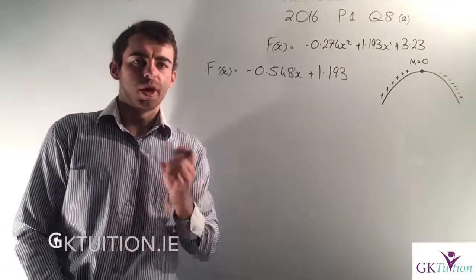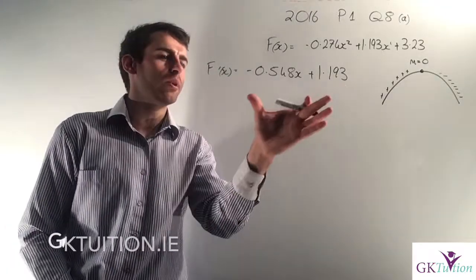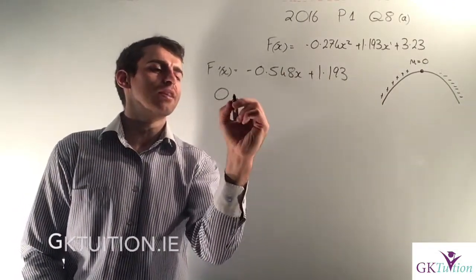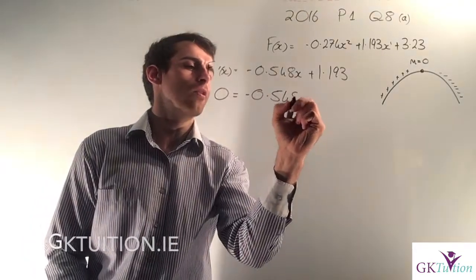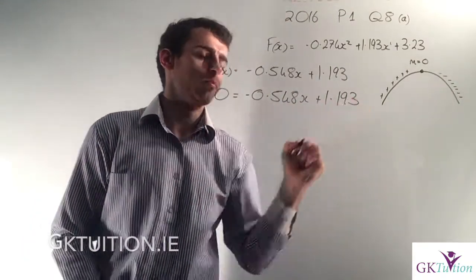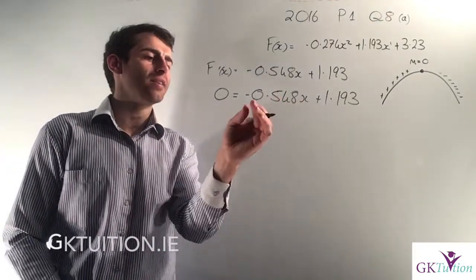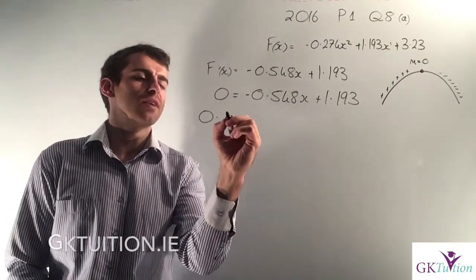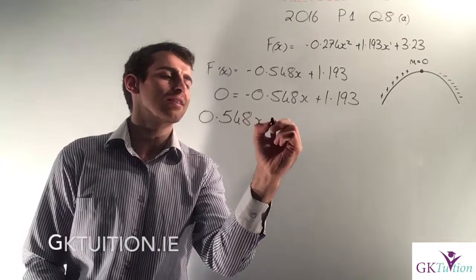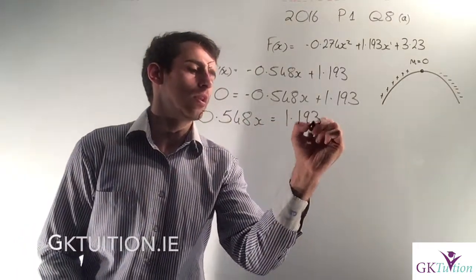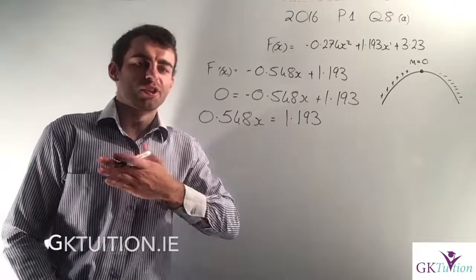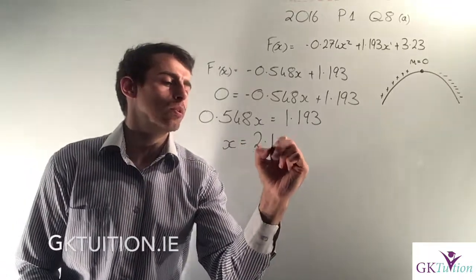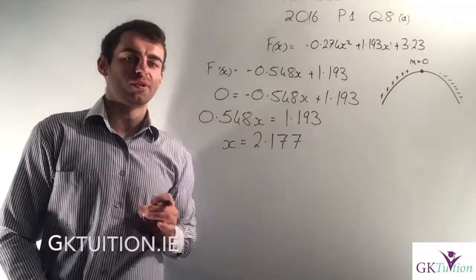Now that I've worked out the slope, in order to identify where the maximum height might be I need to let the slope equal to 0. So I can say 0 equals minus 0.548x plus 1.193. To get x on its own I add 0.548x to both sides, giving me 0.548x equals 1.193. Dividing both sides by 0.548, I work out my x value is 2.177.